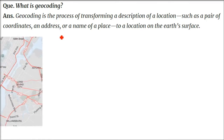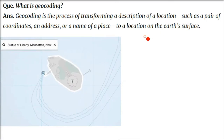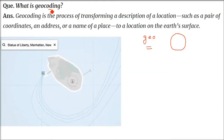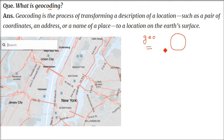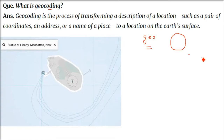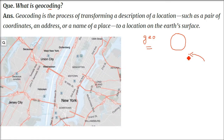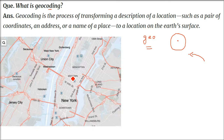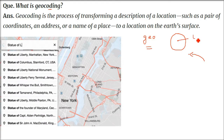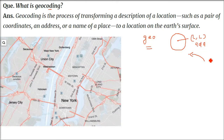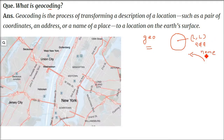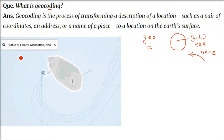What is geocoding? Before we answer this, note that the prefix 'geo' means earth. This geocoding is not the coding we do in programming. Geocoding is the process of transforming a description of a location — it can be coordinates (latitude, longitude), an address, or the name of a place — and putting that information to a location on the earth's surface. This is called geocoding.